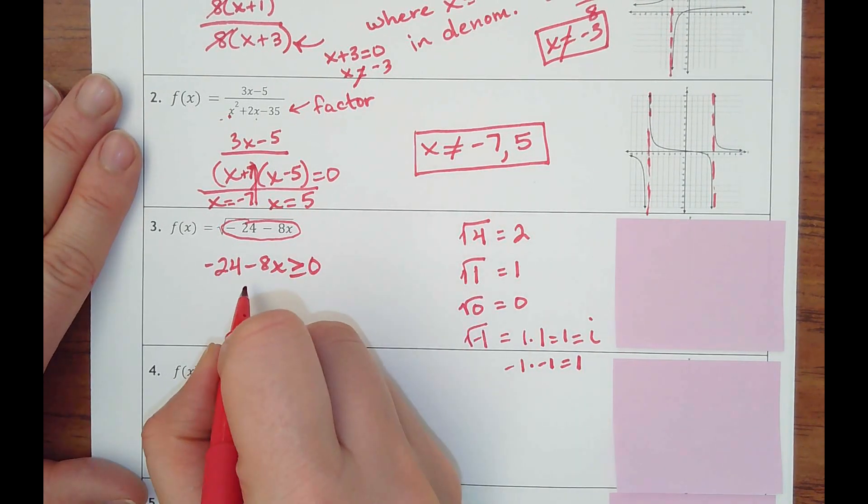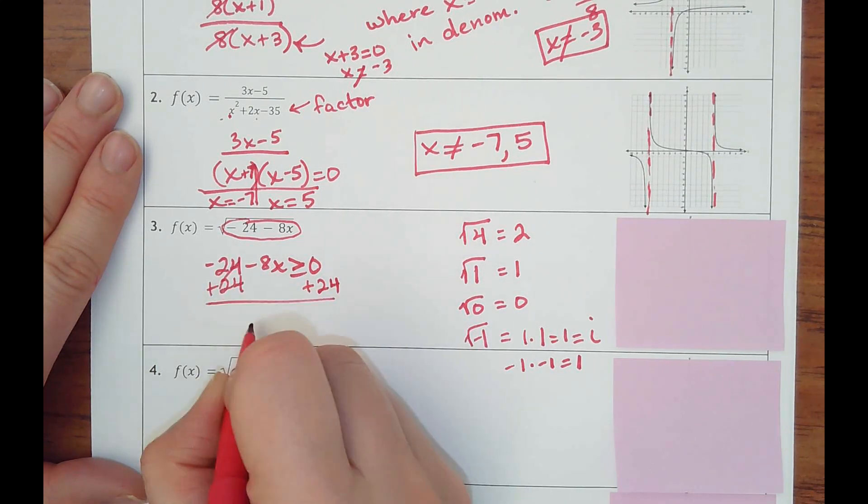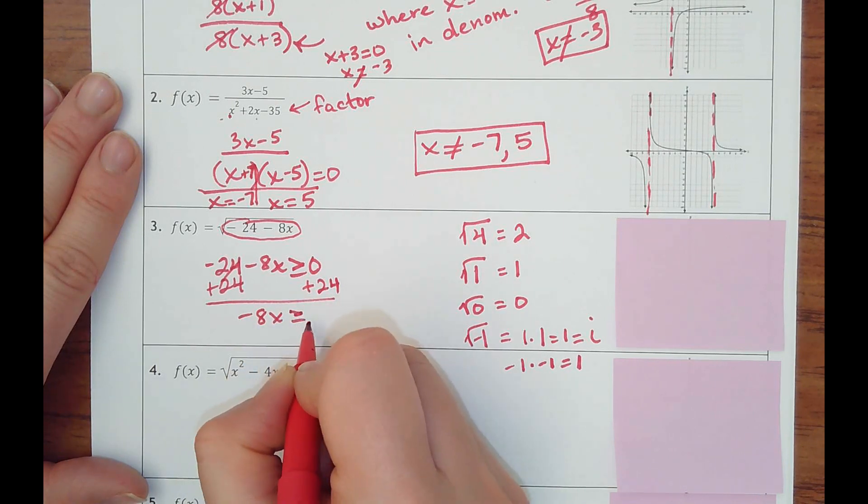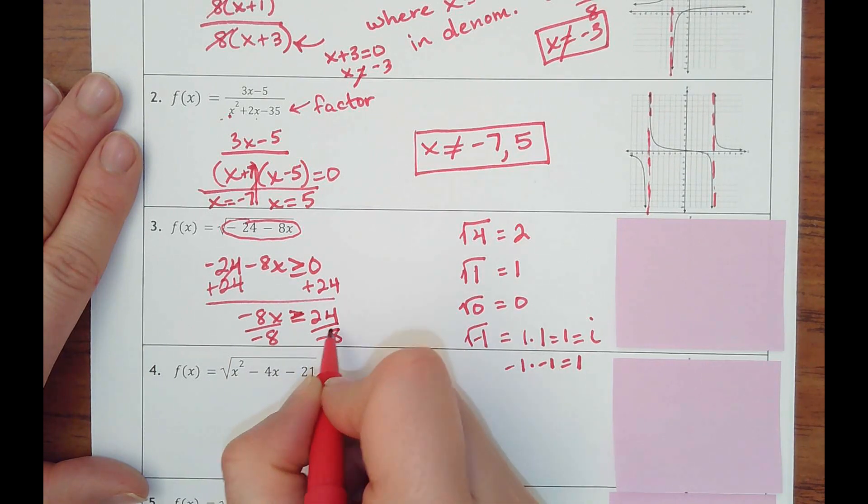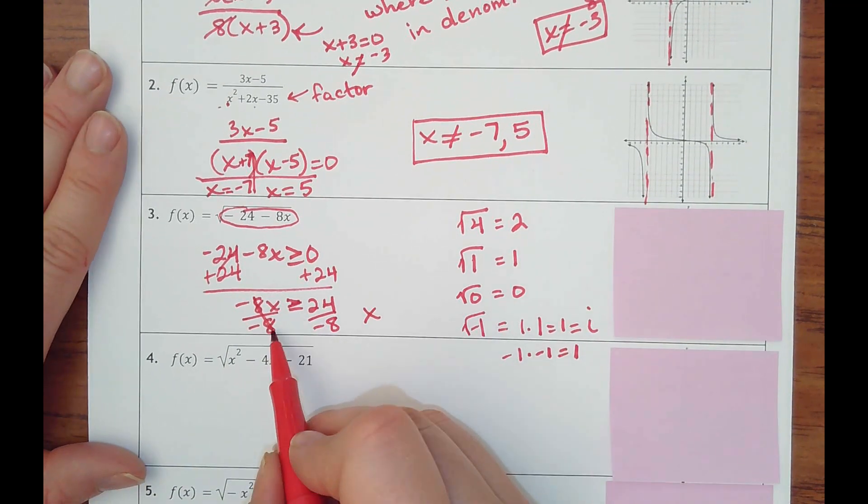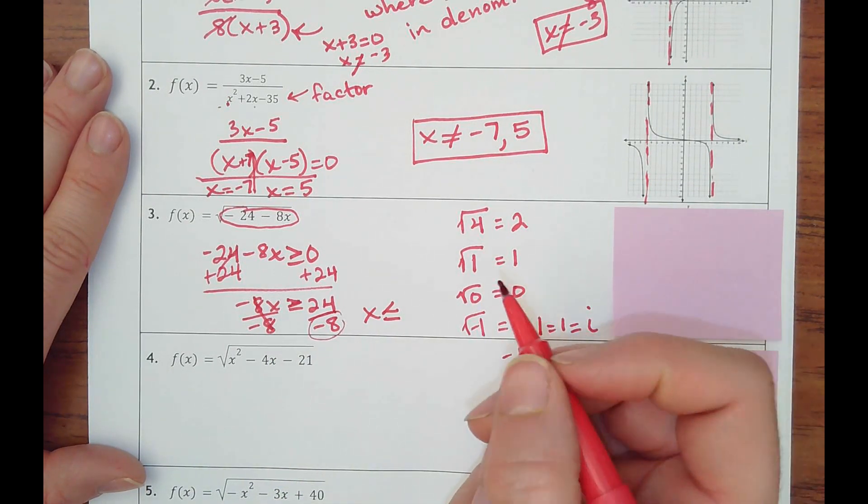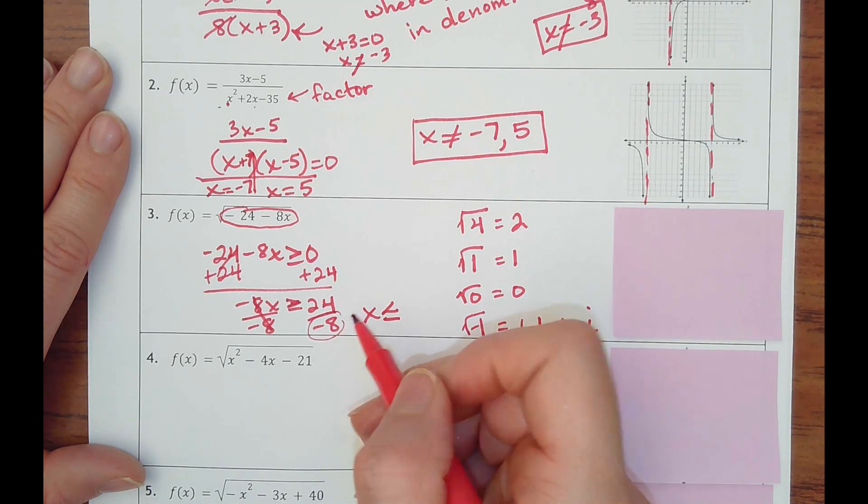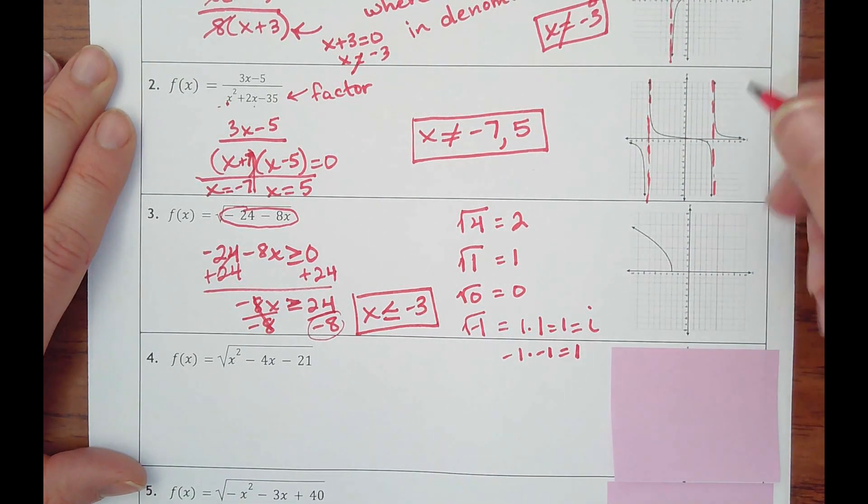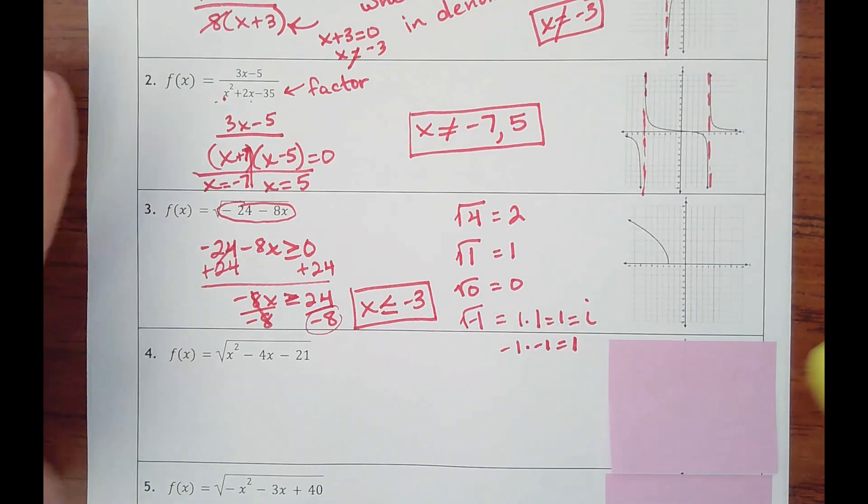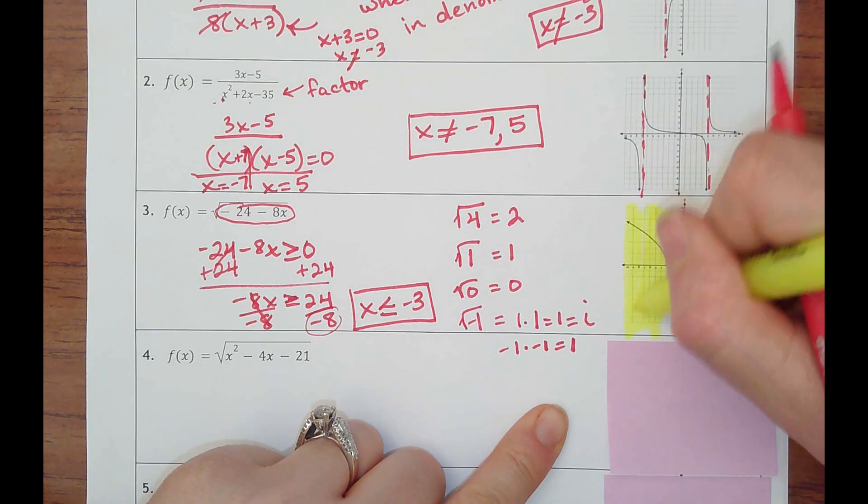And so I would just go on and add 24 and then divide by negative 8. Hoping you remember about inequalities, the only rule that's different is when you multiply or divide by a negative number, you have to flip the sign. So now I would say my x values need to be less than or equal to negative 3. And you can see it right here that everything is going to the left of x is negative 3.